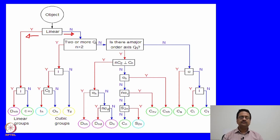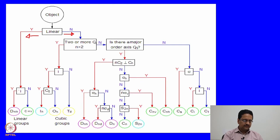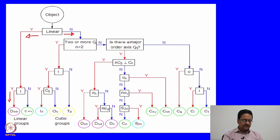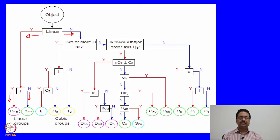This is similar to a family tree. If the molecule is linear, we then ask another question: does the molecule have an inversion center or not? If the molecule has an inversion center, we move along this line and identify the point group as D∞h. If the molecule does not have an inversion center, we then write it as C∞v. We will see these with appropriate examples.